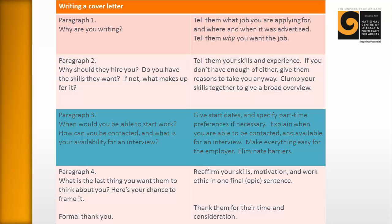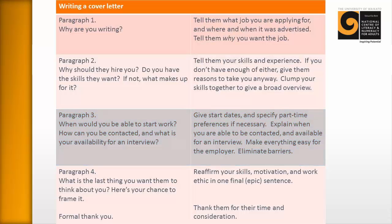Paragraph number three is where you provide all of your availability details to the employer: when you're able to start work, when you can be contacted, when you're able to have an interview, and the kinds of hours you'd be able to work. Remember, you want to make life as easy as possible for the employer — the more barriers you can remove, the more likely you are to have success.